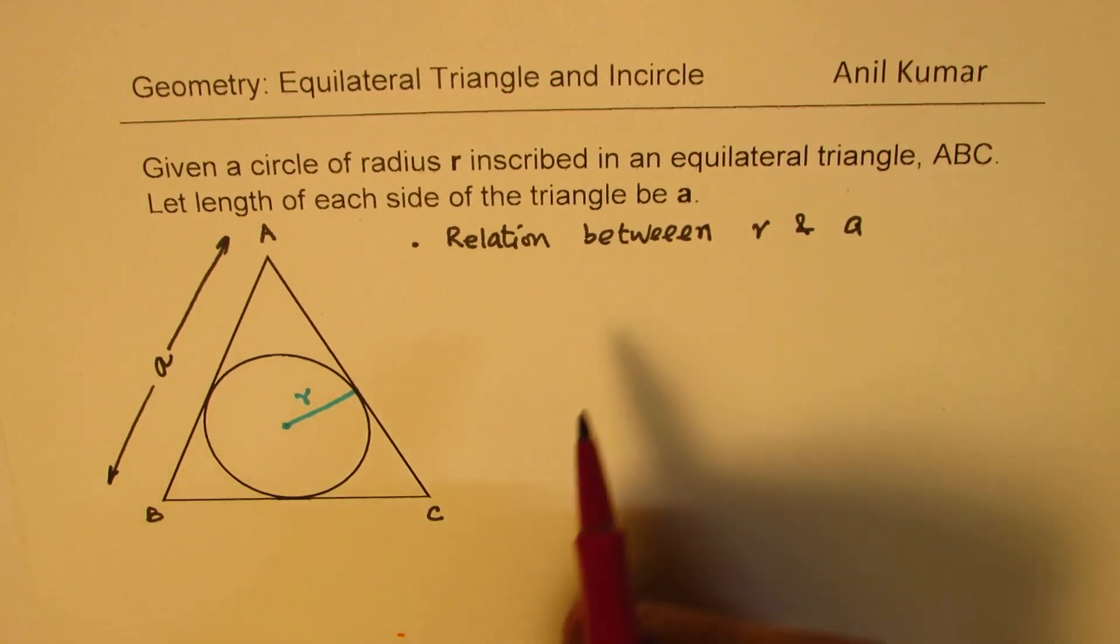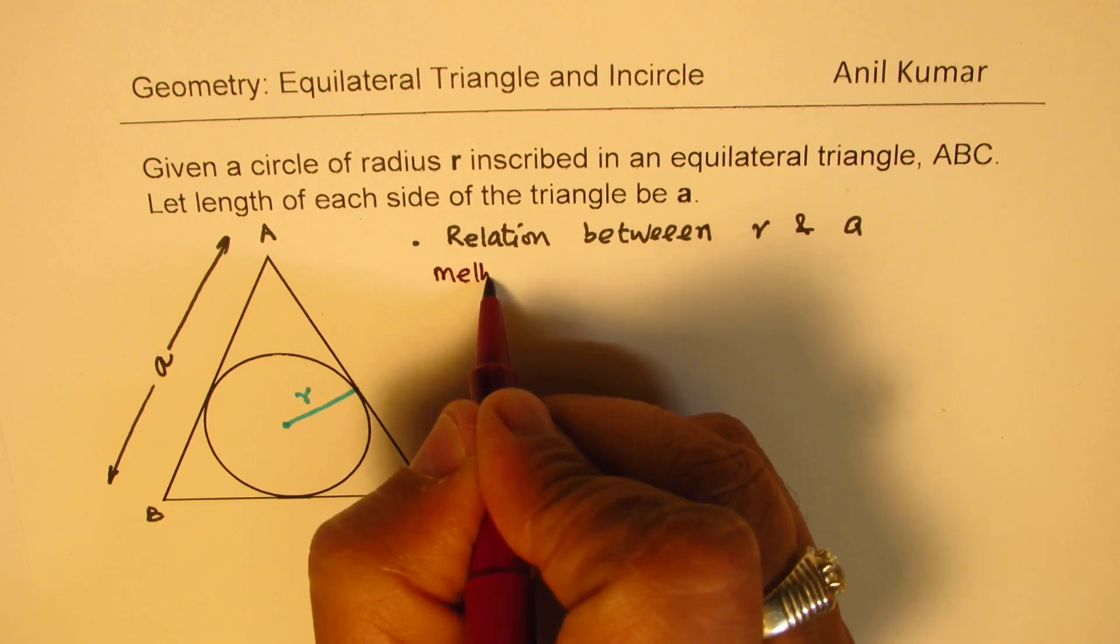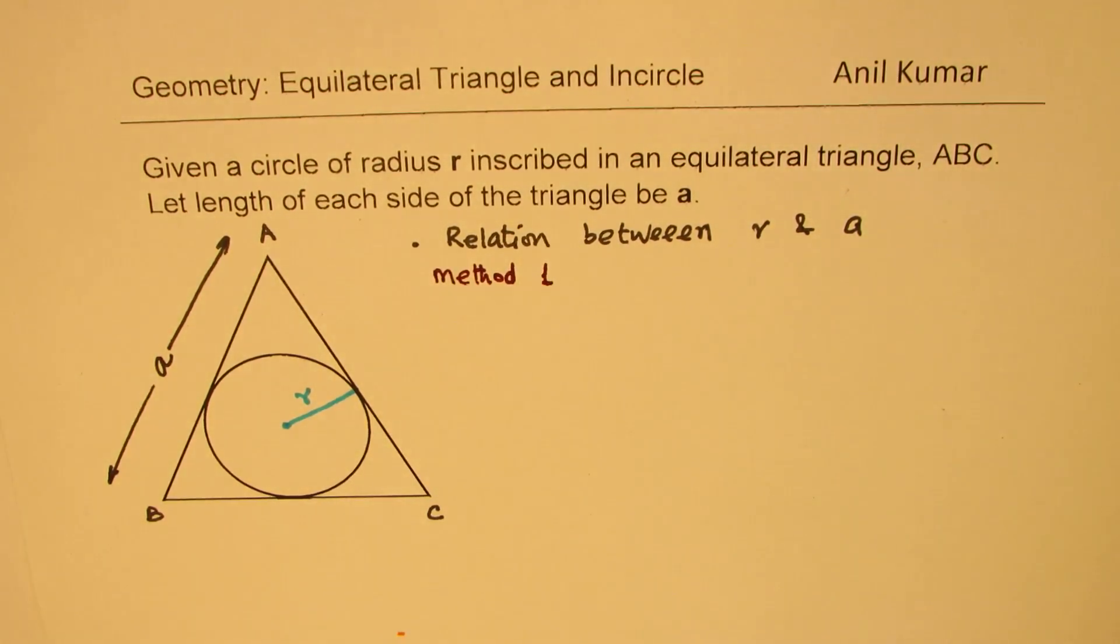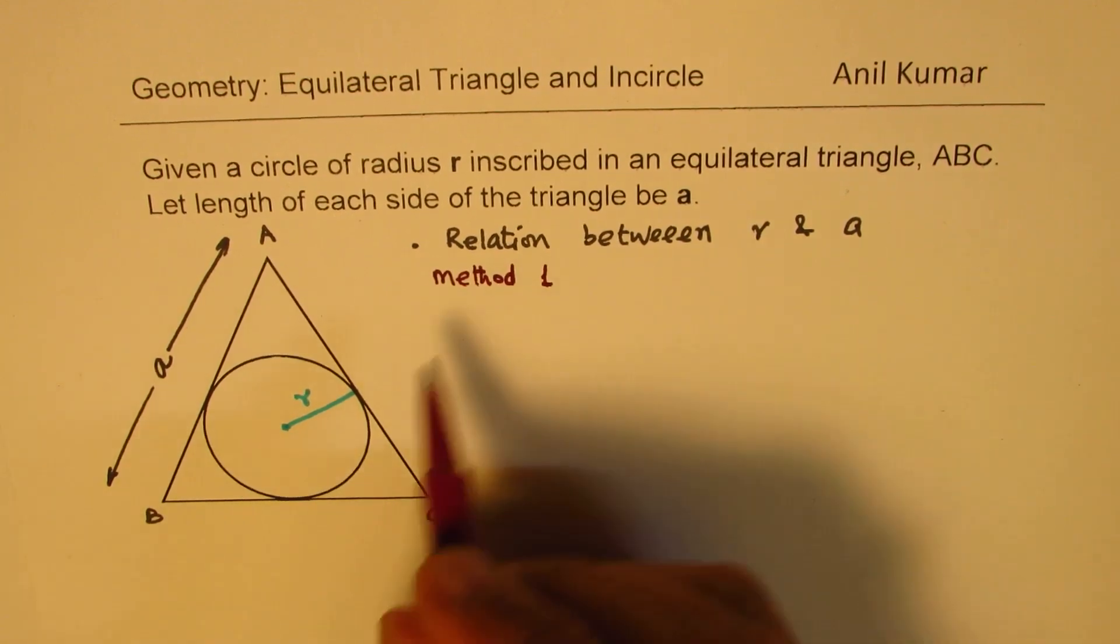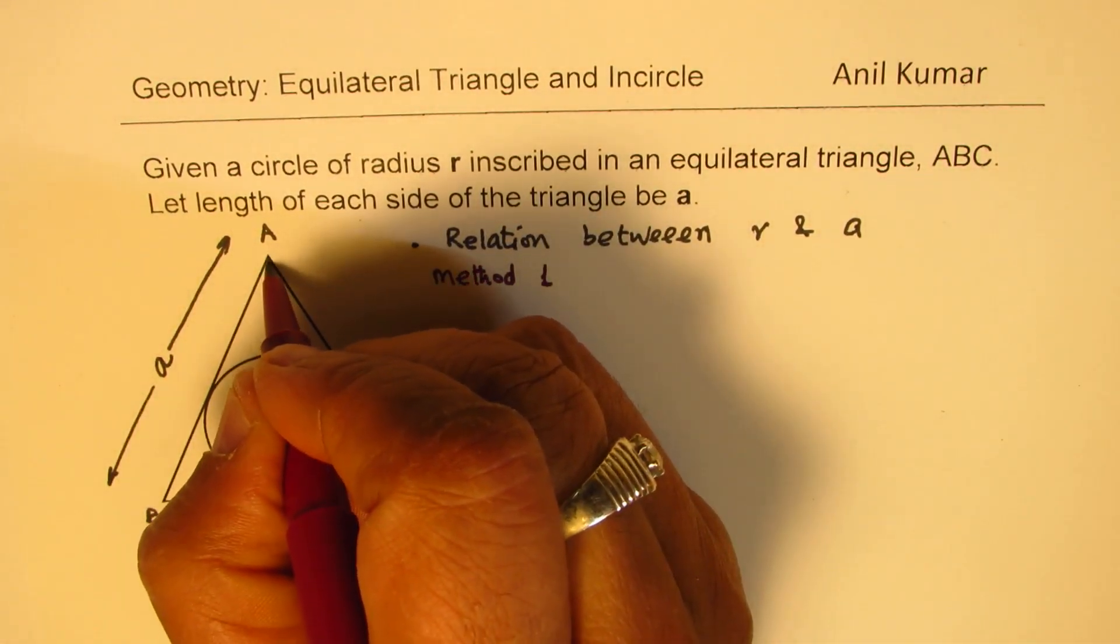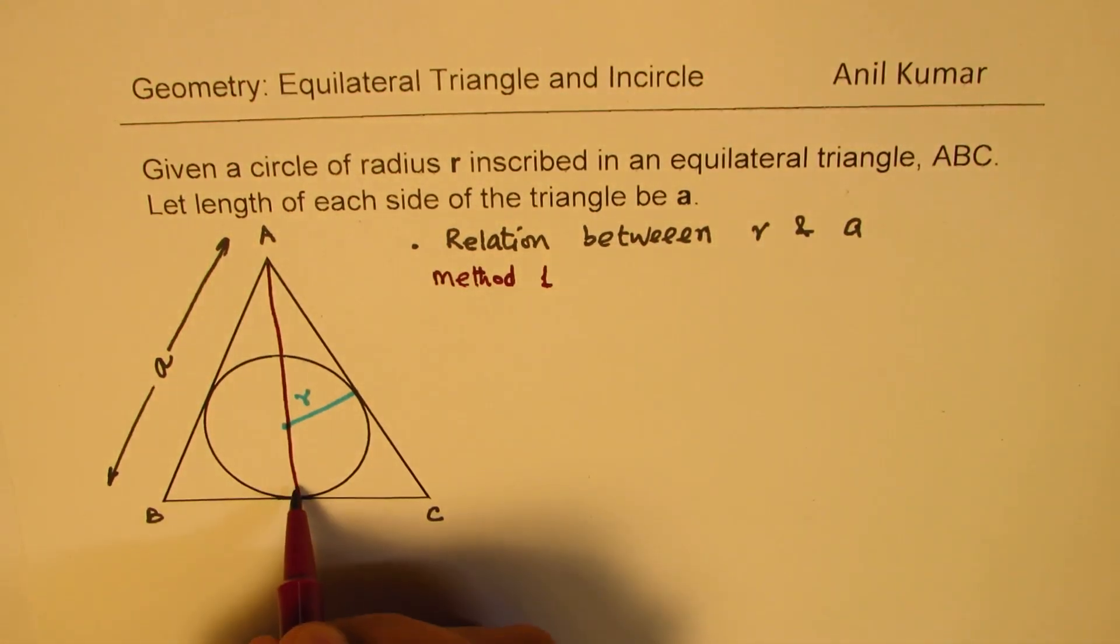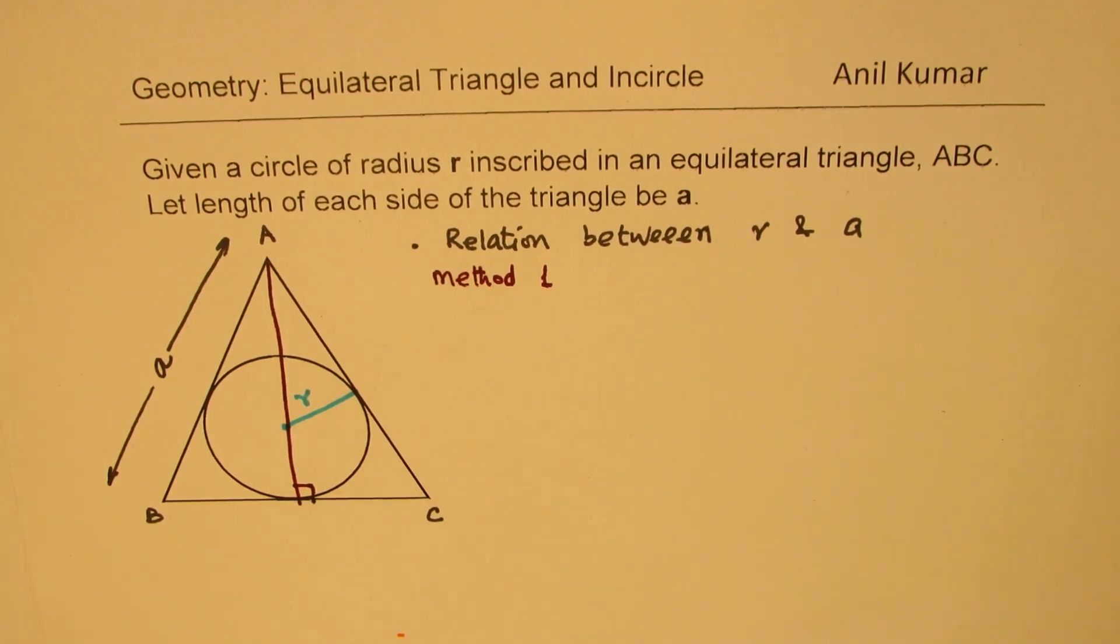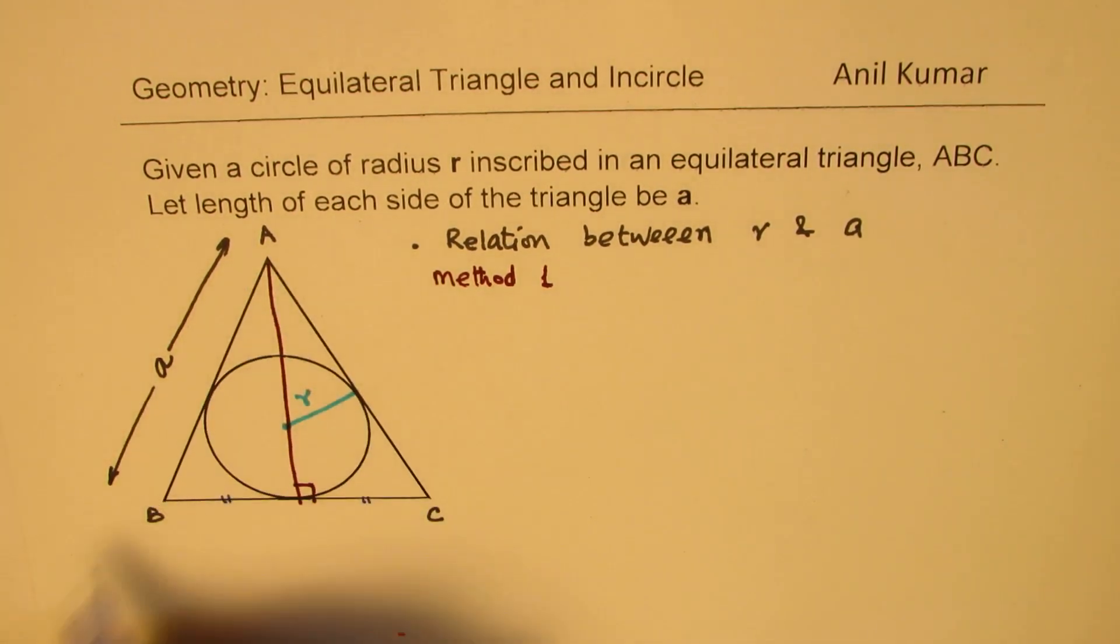So let's see how to do it. I'll actually discuss with you two methods. So we'll have method one. In method one, I'm going to use Pythagorean theorem. So what we'll do here is we'll find the altitude first. If I drop a perpendicular from A to BC, that's the perpendicular. This is an equilateral triangle. It divides the base into two equal parts. So if that is a, in that case, each is a by 2.